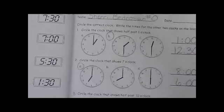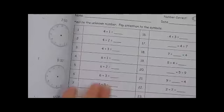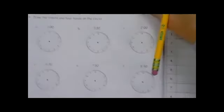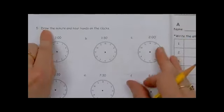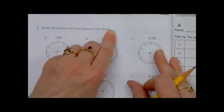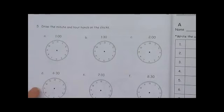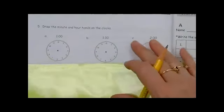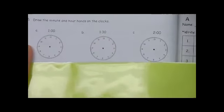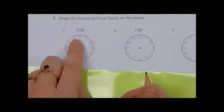Class, moving on. Now that you've completed the front side, go to the back side. The back side says to draw the minute and hour hands on the clocks. Remember class, the minute hand is longer than the hour hand. We always start with the hour though. So, what is this time? One o'clock.